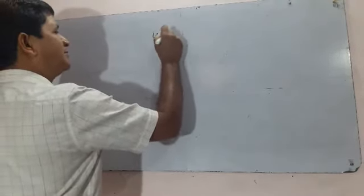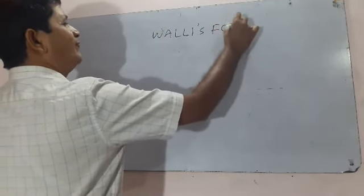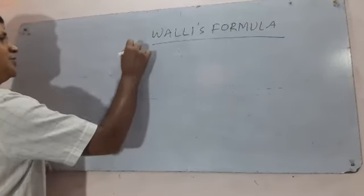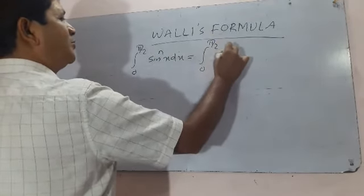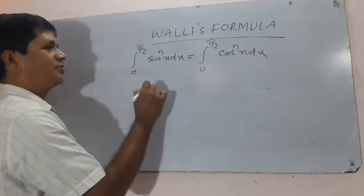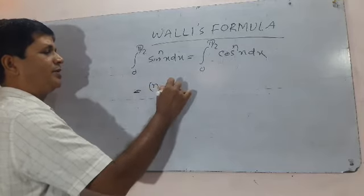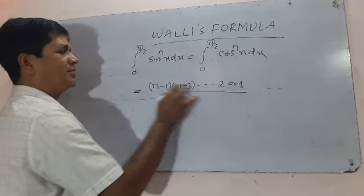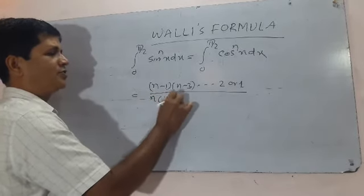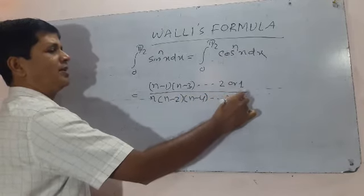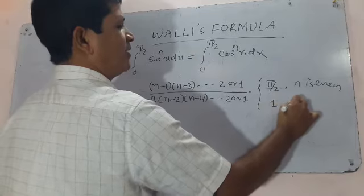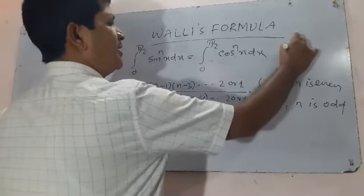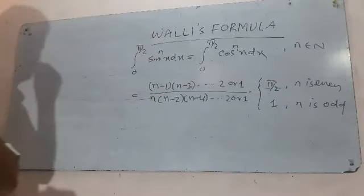Now come to one more type: Wallis' formula. The formula is: the integral from 0 to π/2 of sin^n(x) dx equals the integral from 0 to π/2 of cos^n(x) dx, which equals [(n-1)(n-3)…2 or 1] divided by [n(n-2)(n-4)…2 or 1], multiplied by π/2 if n is even, and multiplied by 1 if n is odd. Here n must be a natural number.